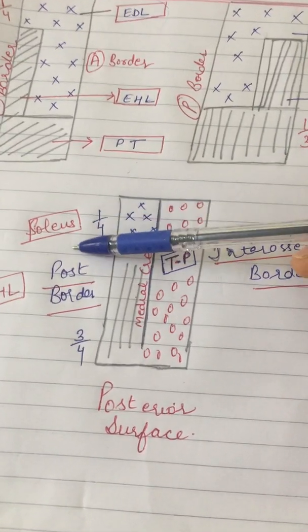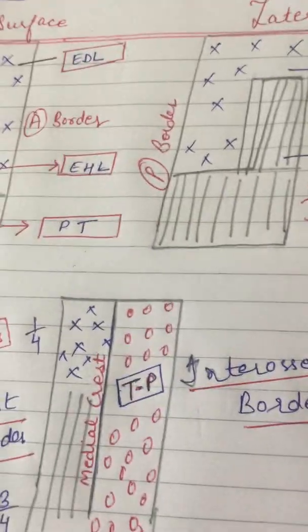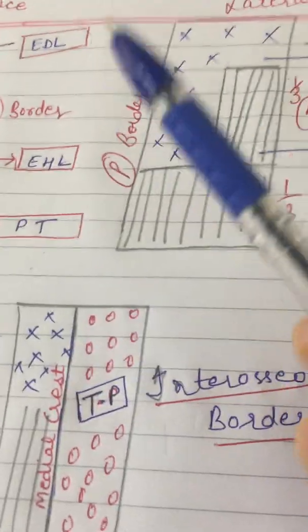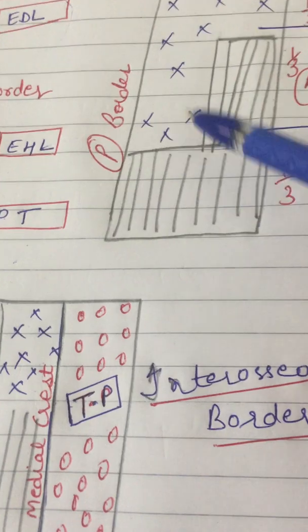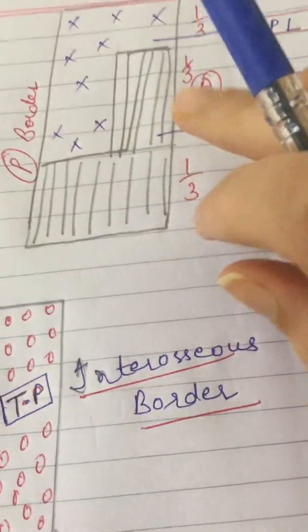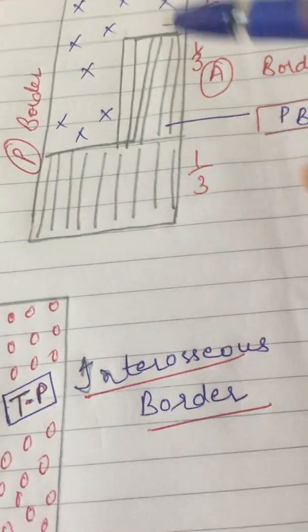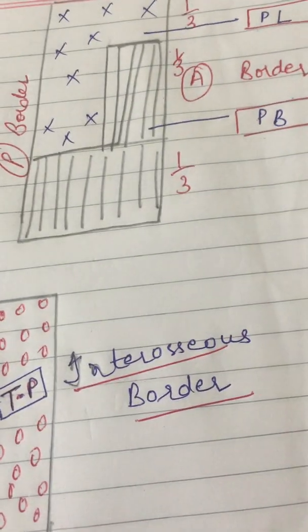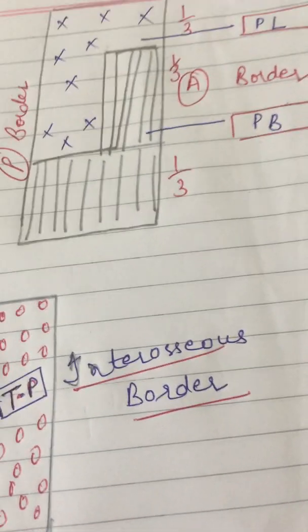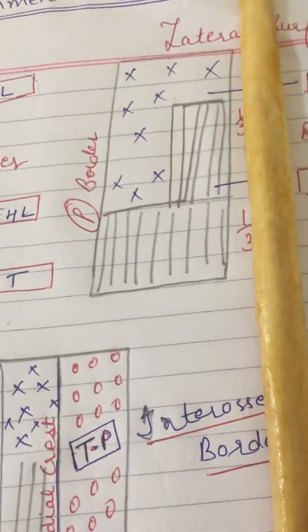The upper one-fourth is soleus — remembering its insertion on the soleal line of the tibia. Now I will discuss the borders. We have the anterior, posterior, and interosseous borders. The anterior border gives attachment to the anterior intermuscular septum of the leg.